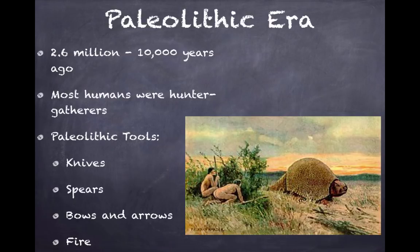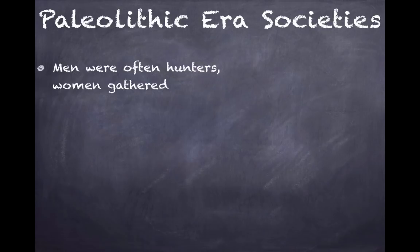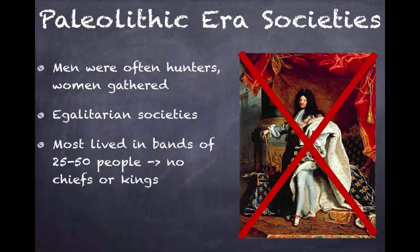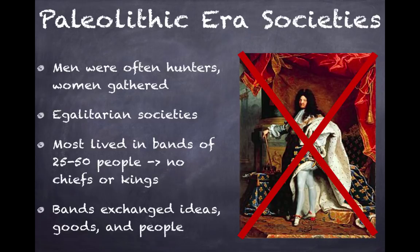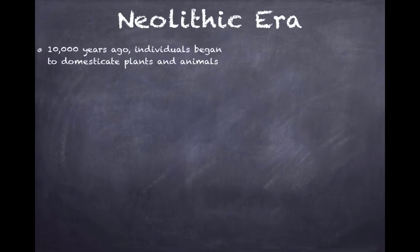What were societies like in these groups or bands? Men were often the hunters and women often gathered. They were egalitarian societies, meaning everyone was pretty much equal. Most people lived in bands of 25 to 50 people with no chiefs or kings. These bands did exchange ideas, goods, and people with other neighboring bands.